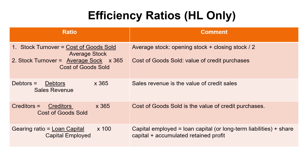For creditors turnover, if the time is going up, on one hand it's positive — you're getting longer to pay creditors. On the other hand, if these are suppliers, a supplier could say you should have paid in 30 days but you're taking 50 — and demand cash on delivery from now on. That would cause serious liquidity problems, as you'd need to find the cash immediately rather than waiting 30 to 90 days.